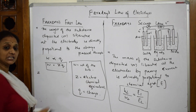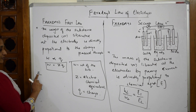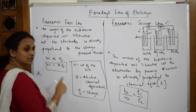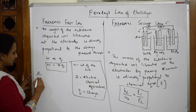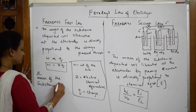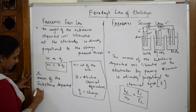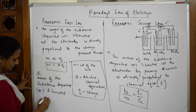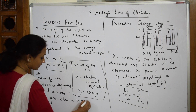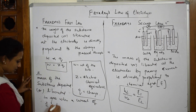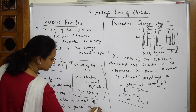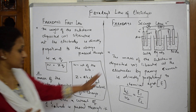Now let us define z, the electrochemical equivalent. Z is defined as: the mass of the substance deposited or liberated in grams when a current of one coulomb is passed through it. That is your definition of electrochemical equivalent z, summarizing the first law.